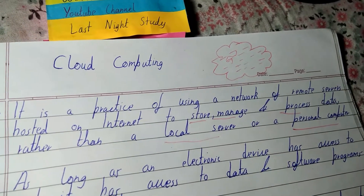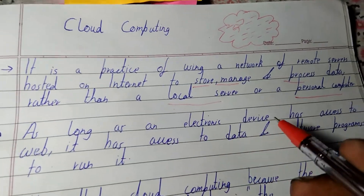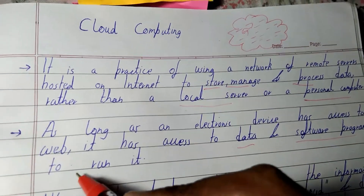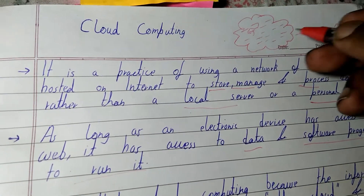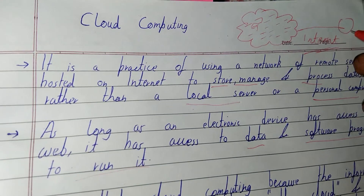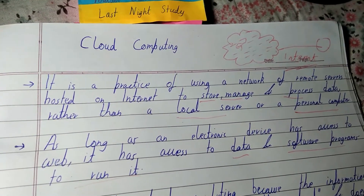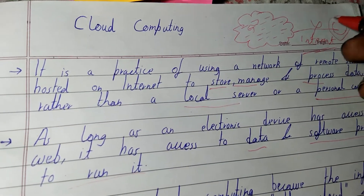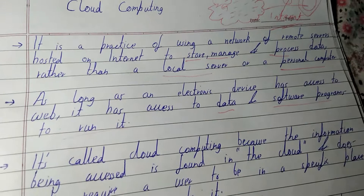You can access it later via the internet, and this will save space on your personal computer as well as your local server. As long as an electronic device has access to the web, it has access to the data and software programs to run it. Internet access is required between the device and the cloud. Once the internet connection goes down, you can't access the data.